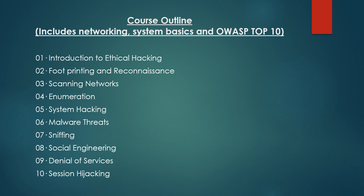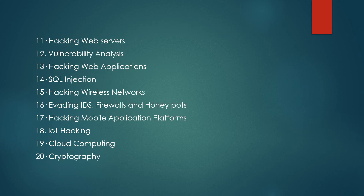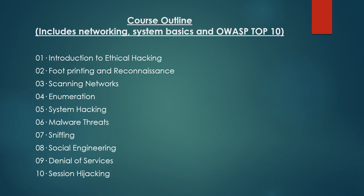First, we are going to get through 20 modules, right from ethical hacking to cryptography. Before getting into ethical hacking, we need to know what networking is, what a system is, and what the internet is — because if you want to hack any network or system, you need to know what a network and system are first. So we are going to learn networking concepts and system basic concepts, and then get into these 20 modules.